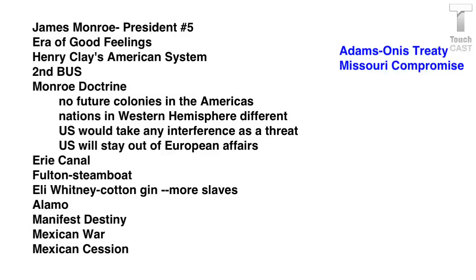I want to fill up the whiteboard so you can get some of the terms. This is what you need to know: the Adams-Onis Treaty, the Missouri Compromise, the Monroe Doctrine, Boom and Bust, and Henry Clay's American System. Know all four of those things under the Monroe presidency.